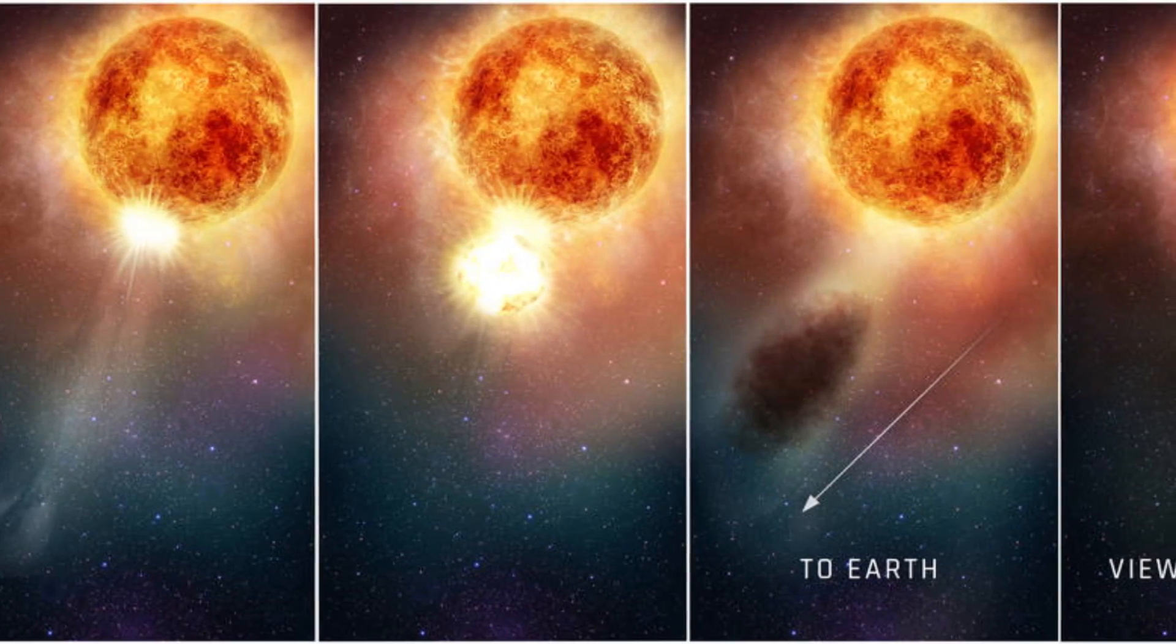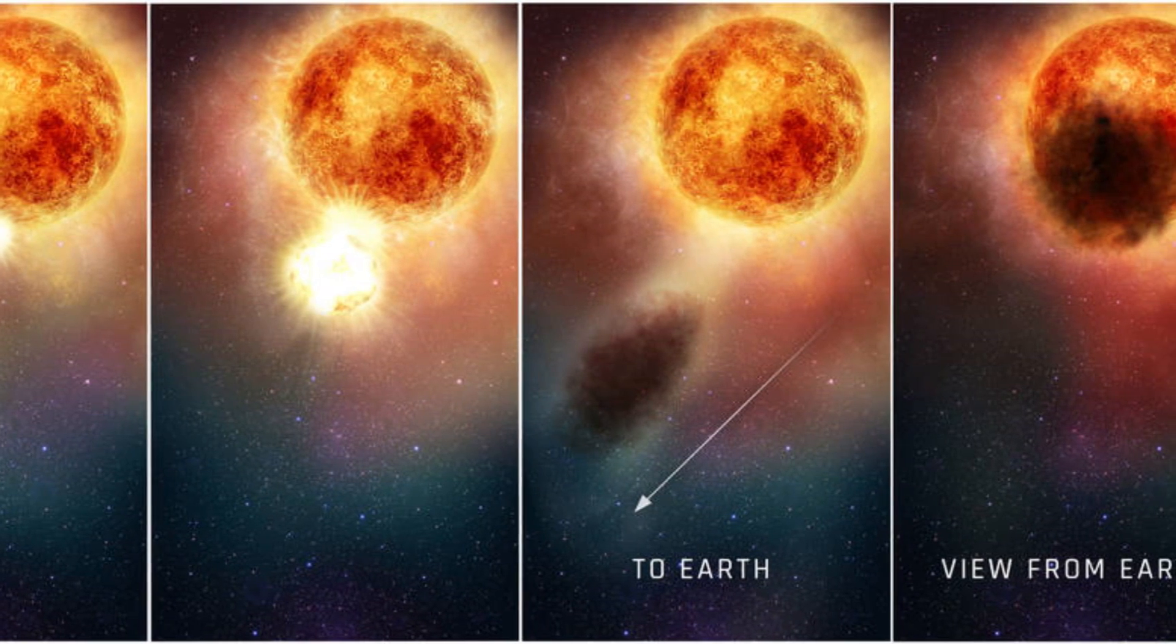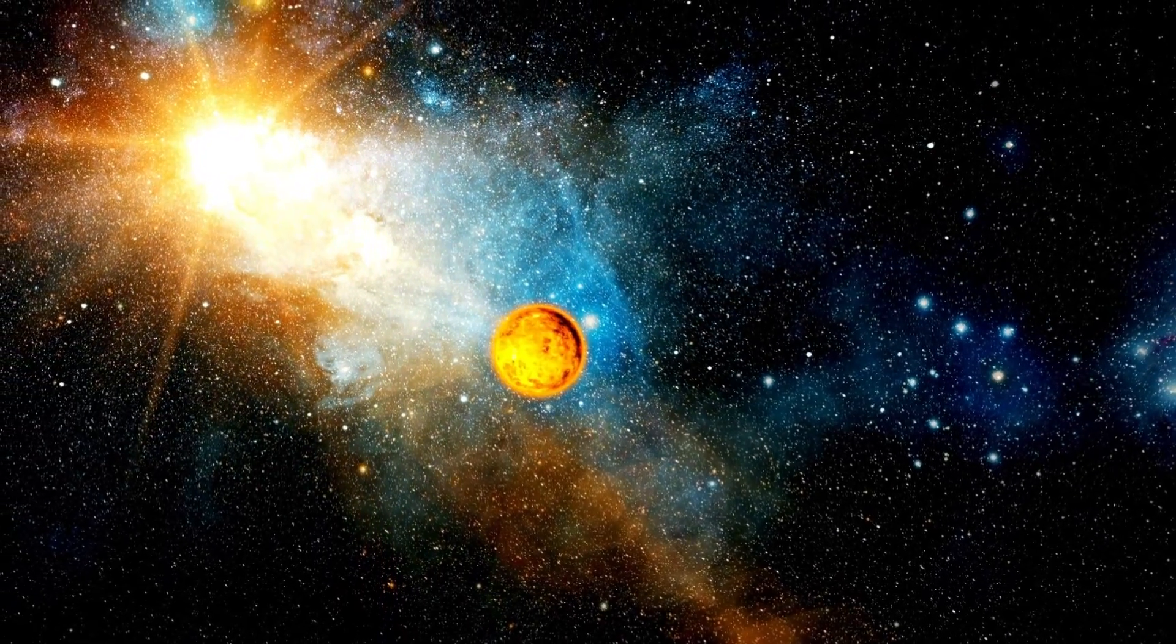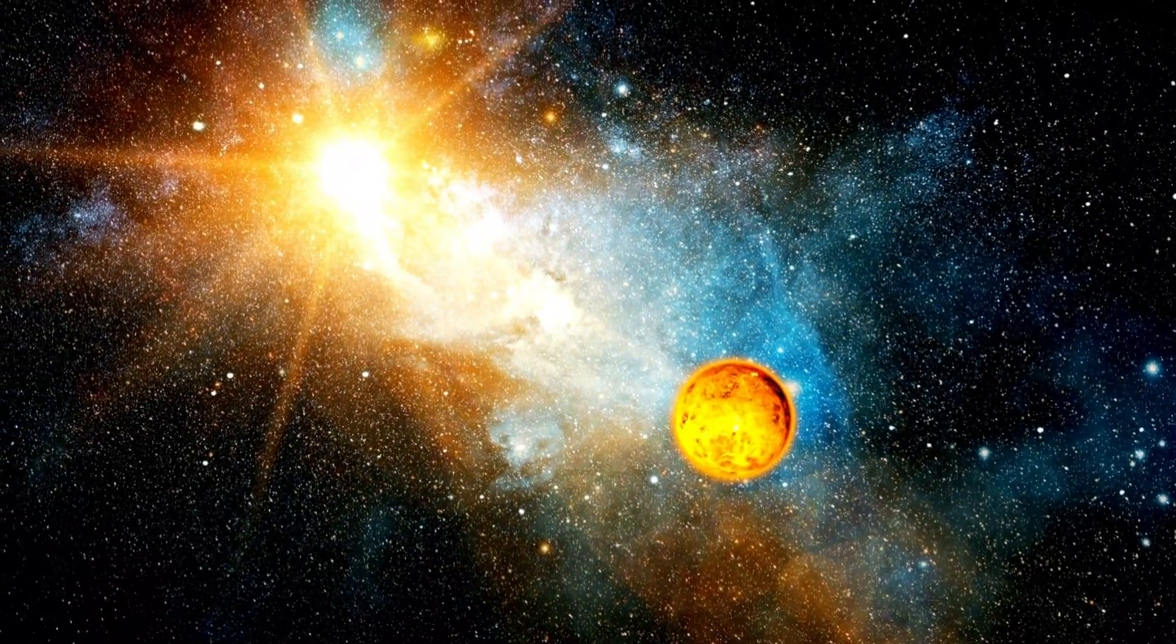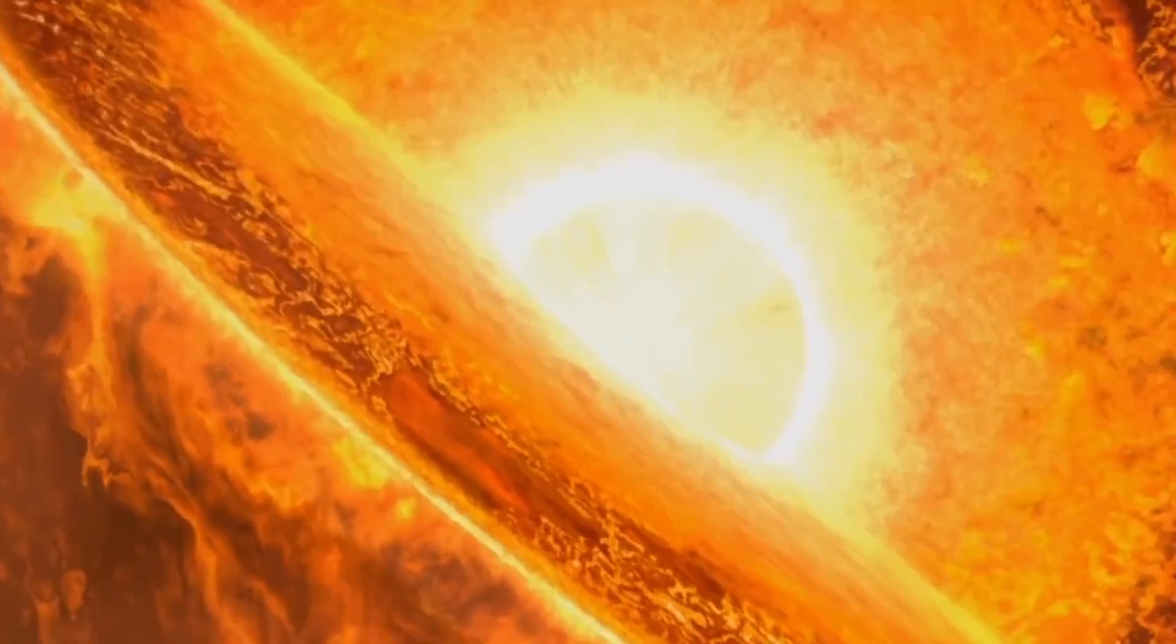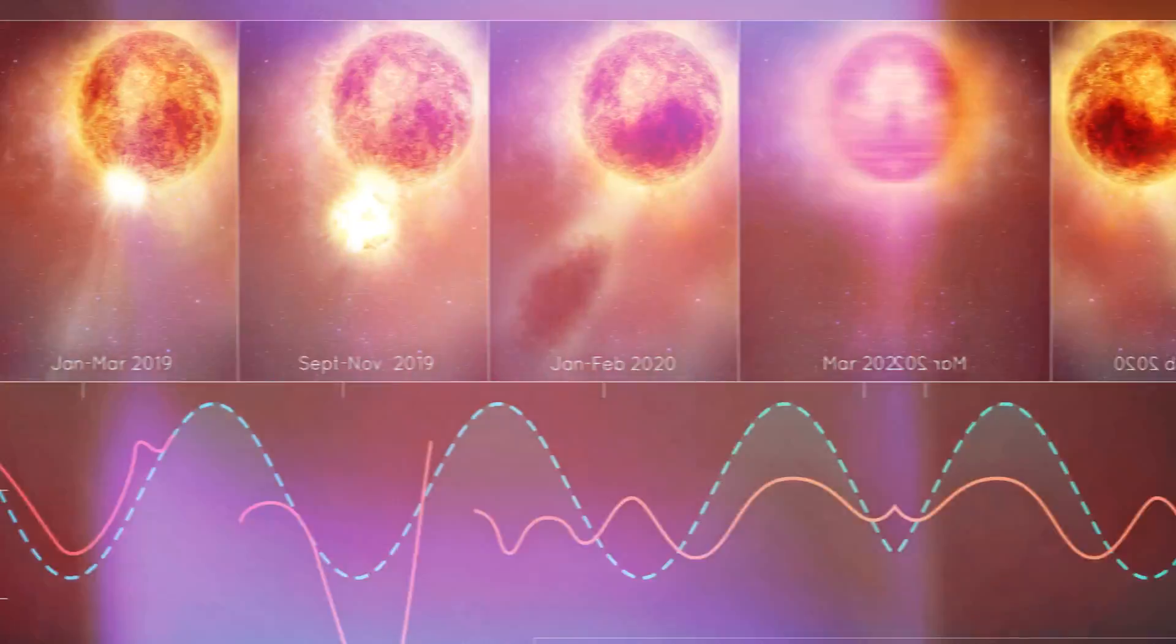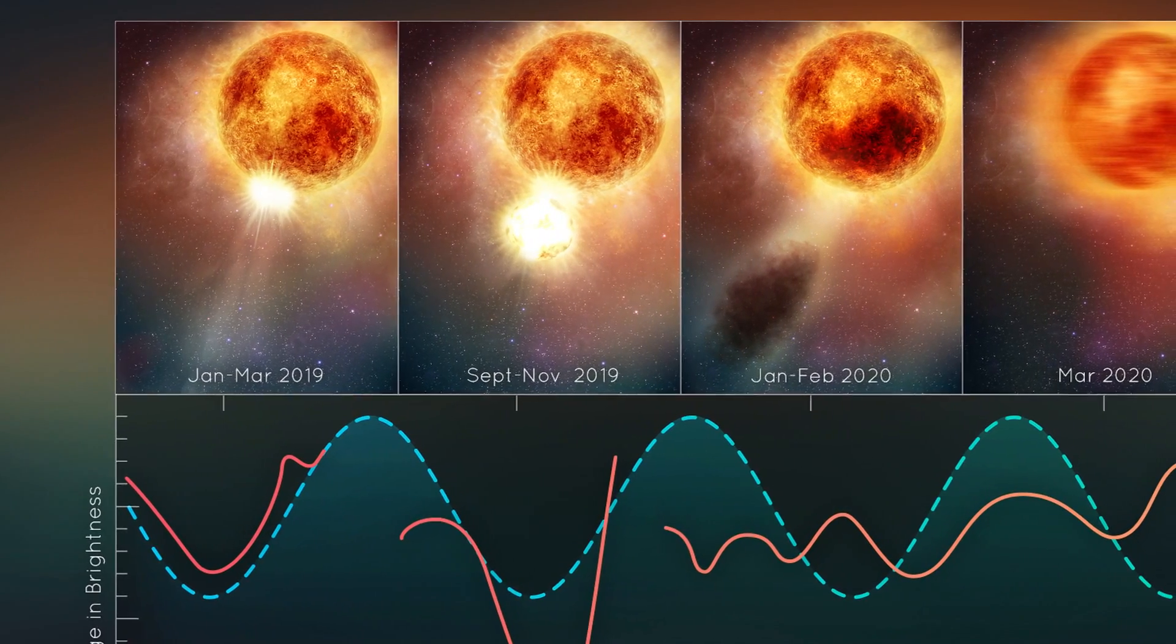Elon Musk's discerning eye detects patterns in Betelgeuse's brightness cycle. Ordinarily, the star's luminance patterns span around 400 days, a rhythmic dance that has persisted for centuries. However, recent observations reveal a vivacious cadence that shifts every 130 days. In 2019, Betelgeuse embarked on an uncommon journey, a powerful expulsion of its outer layers marking the genesis of its cryptic light dance.